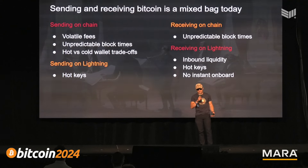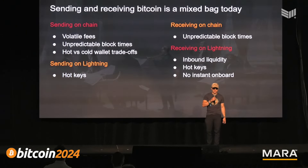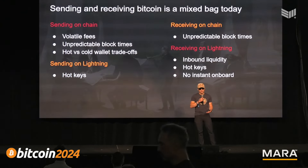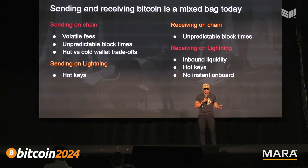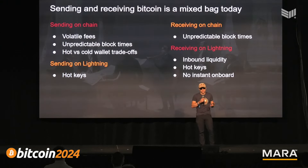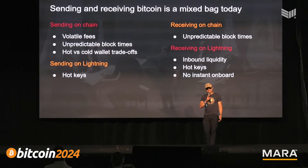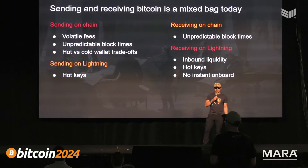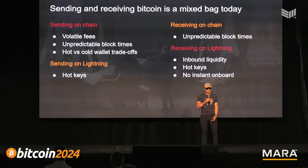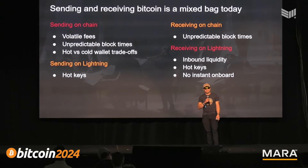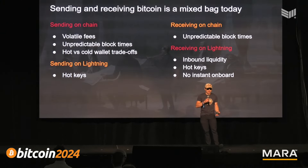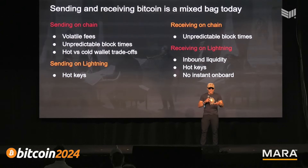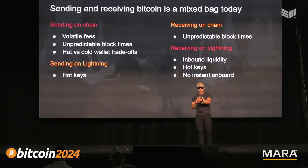On the other hand, if I've got a lightning wallet and I want to send some Bitcoin, I just send it — the only problem is that my keys are hot. For receiving Bitcoin on-chain, it's super easy: I make that locking script, give the address to someone, they send me Bitcoin. Receiving on lightning is maybe not so great — if I want to receive two hundred dollars but my lightning channel only has a hundred and ten dollars of inbound capacity, I can't. There are also hot keys, and onboarding someone new requires them to get a channel first, which can be costly and time-consuming.